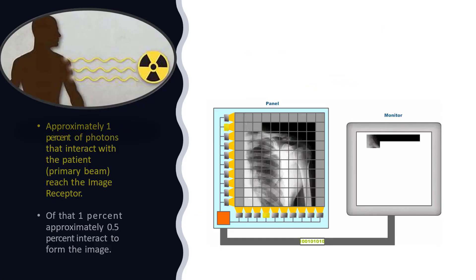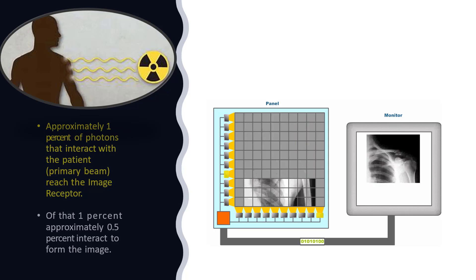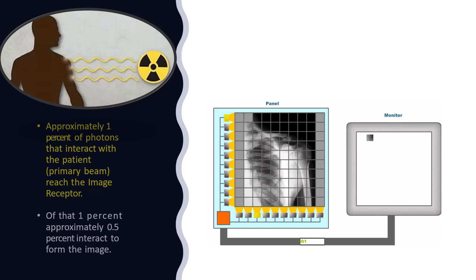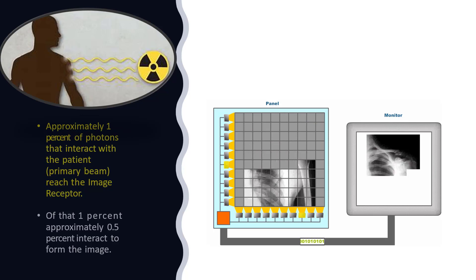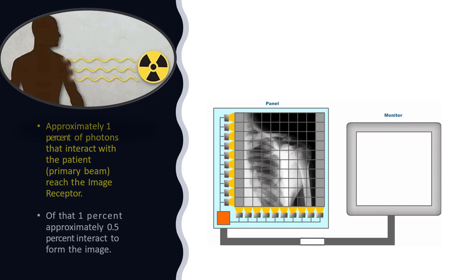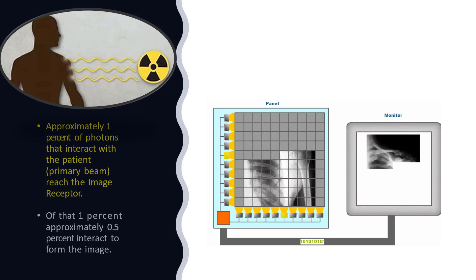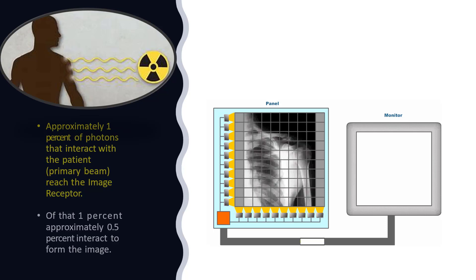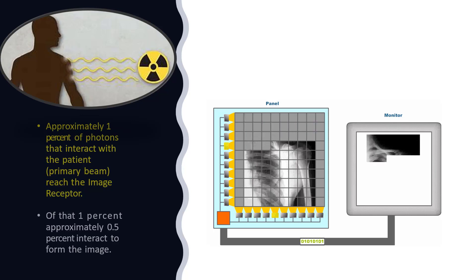Let's take a look at how ionizing radiation interacts with the patient's tissue as it is received on a flat panel image receptor. The primary beam — the radiation technique we have selected — is an energy that interacts with the patient's tissues. The majority of this energy is dissipated in the tissue as heat, approximately 99%, with less than 1% being the actual remnant radiation that forms the image. Of that 1%, approximately 0.5% interacts to form the image through the photoelectric effect. The rest is scatter radiation, which gives us no information for image creation.